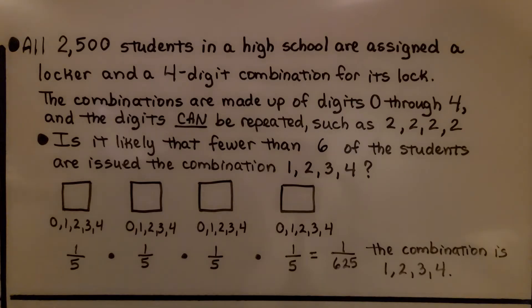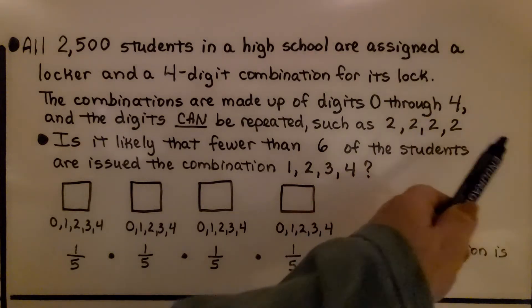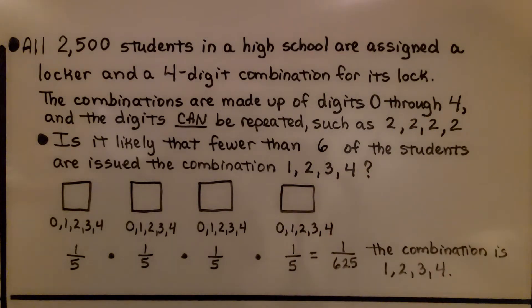All 2,500 students in a high school are assigned a locker and a four-digit combination for its lock. The combinations are made up of digits zero through four and the digits can be repeated, such as 2, 2, 2, 2. Is it likely that fewer than six of the students are issued the combination 1, 2, 3, 4?